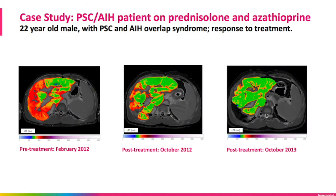This case study is a 22-year-old male with PSC and AIH overlap syndrome. In February 2012, he was put on the liver transplant list. With Liver Multi-Scan tracking his progression as he positively responded to treatment, he no longer needed a liver transplant. The cost savings and potential adverse events from the liver transplant were mostly avoided because of Liver Multi-Scan.